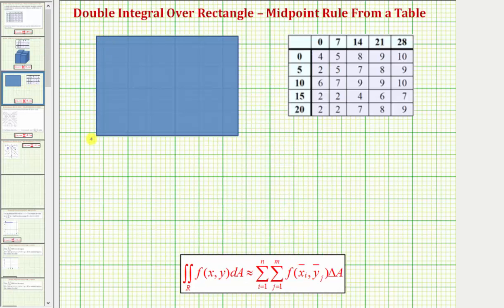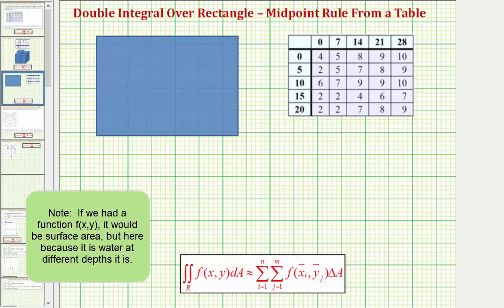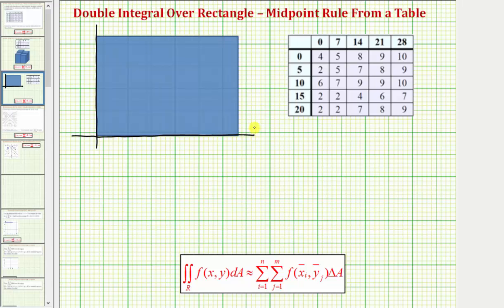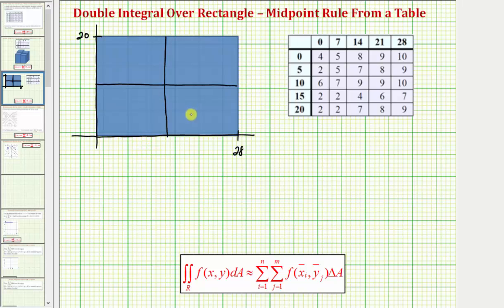Let's place the surface area of the pool on the xy plane. We know the pool is 28 feet by 20 feet, so this would be 28 feet and this would be 20 feet. Because m equals n equals two, we'll partition the horizontal distance into two equal pieces, and we'll do the same for the vertical distance. This makes four smaller partitions. If this is 28, this would be 14; if this is 20, this would be 10. Delta A is the area of each smaller partition — each rectangle is 14 feet by 10 feet — therefore delta A equals 14 times 10, which equals 140.